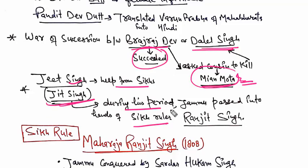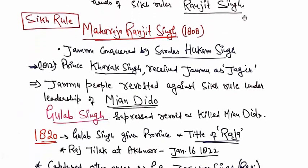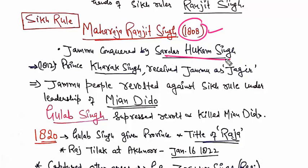Next we will talk about Sikh rule. Maharajah Ranjit Singh in 1808 captured Jammu through Hukam Singh. And then in 1812, Maharajah Ranjit Singh's son was given charge of Jammu.